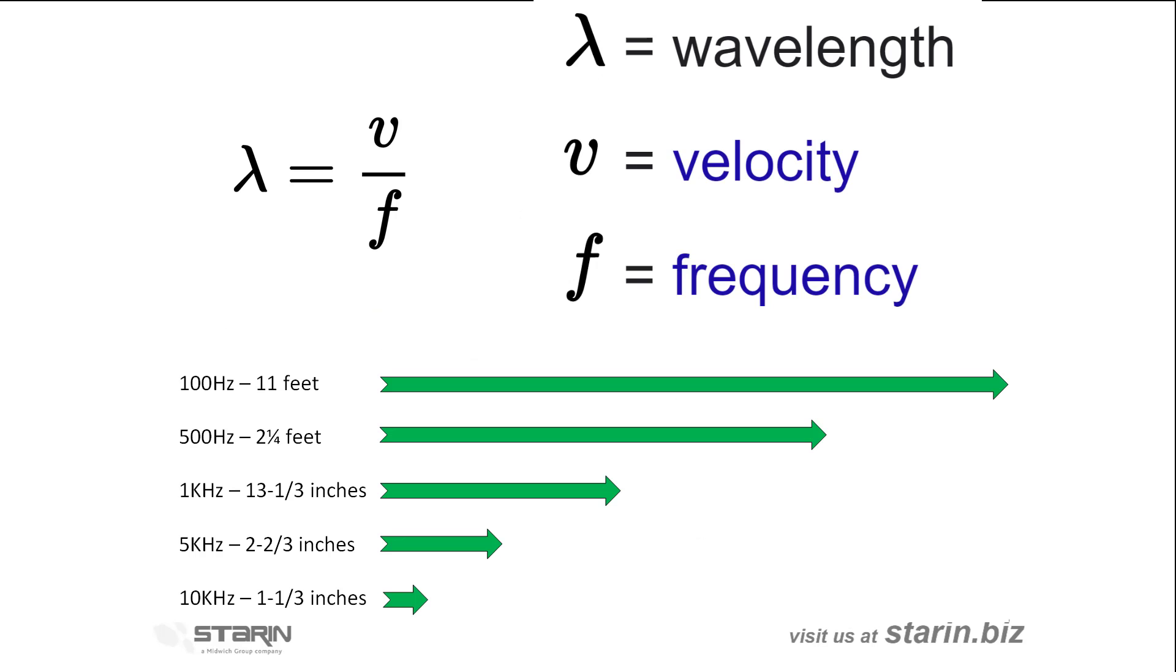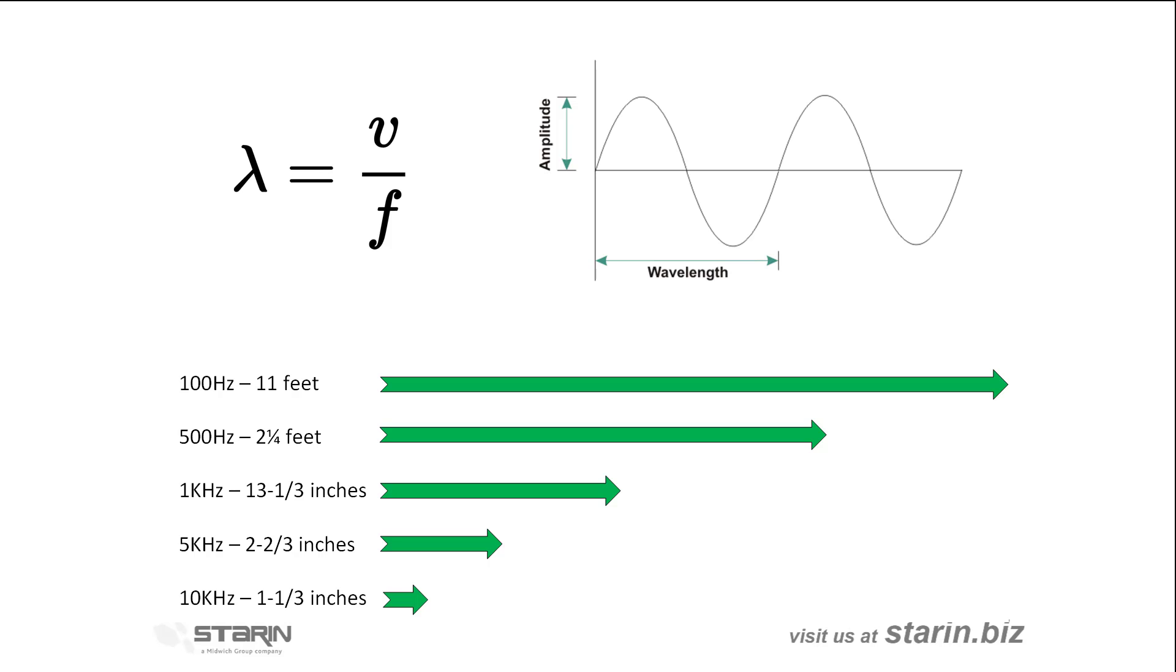The formula to calculate the wavelength is the wave velocity divided by the frequency. The velocity of sound in air is 340 m per second. So, at 100 Hz, the wavelength is over 11 feet. At 500 Hz, the wavelength is 2¼ feet.